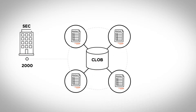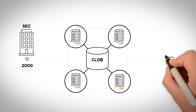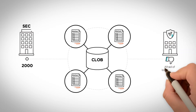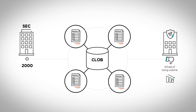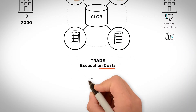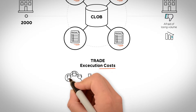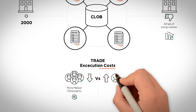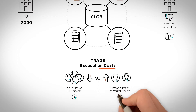Back then, the CLOB concept was opposed by securities companies because they were afraid of losing volume. Trade execution costs are lower when more market participants can compete for order flow, versus when orders are routed to a limited number of market makers with potentially non-competitive quotes.